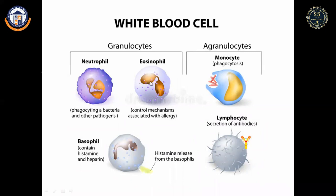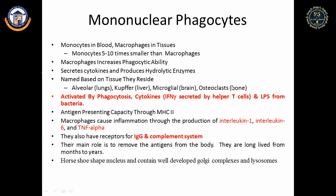Macrophages perform phagocytic activity and produce hydrolytic enzymes. Based on their tissue location, macrophages have different names: in lungs they are alveolar macrophages, in liver they are Kupffer cells, in brain they are microglial cells, and in bone they are osteoclasts. Antigen-presenting capacity is through MHC class II. Monocytes also have receptors for IgG and complement; macrophages cause inflammation through cytokines IL-1, IL-6, and TNF-alpha.